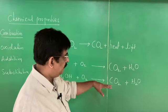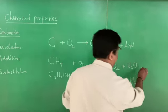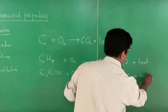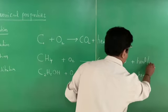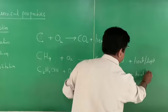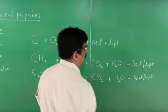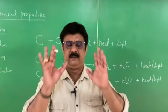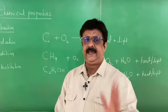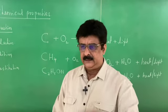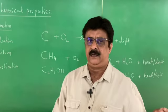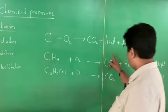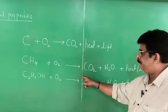All carbon compounds on combustion produce the same type of products: carbon dioxide and water vapor, along with energy in the form of heat or light. The amount of heat from different carbon compounds varies, but the products are the same.